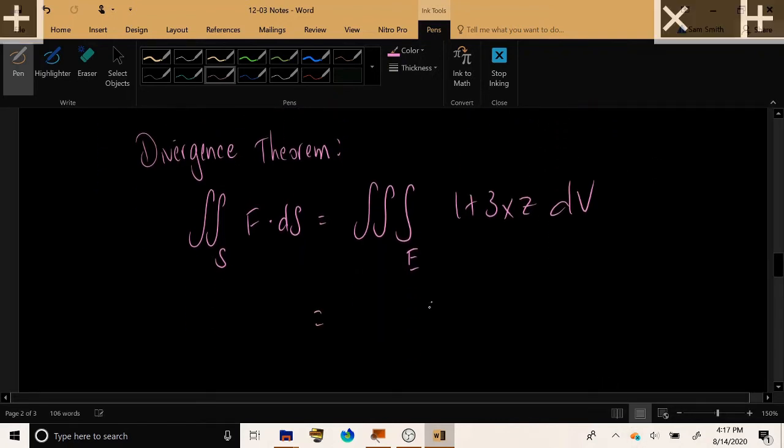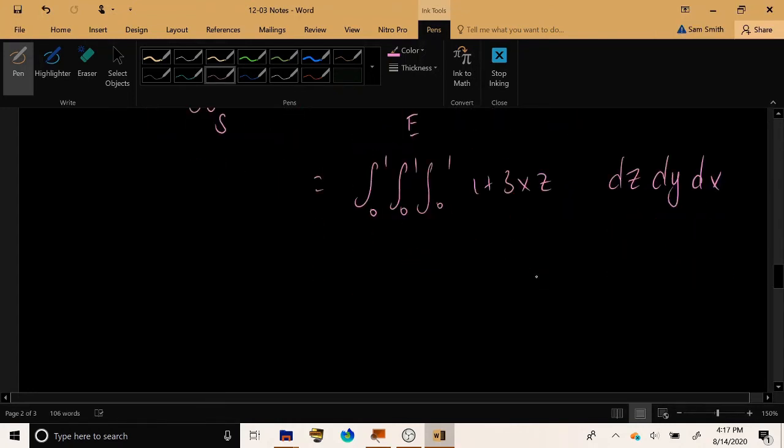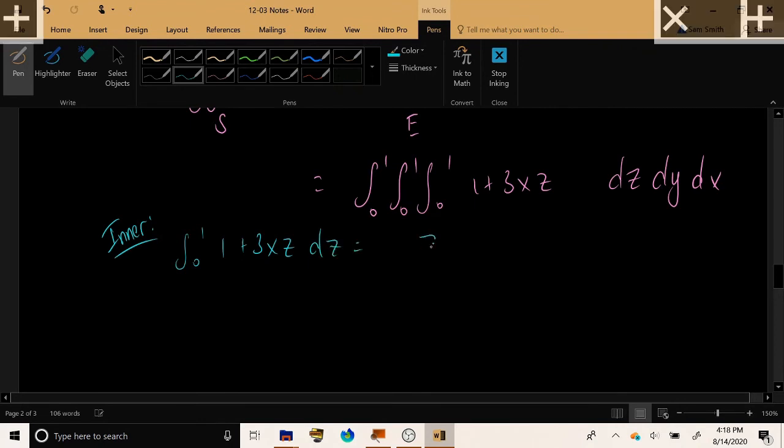It just goes from 0 to 1 in the z direction, constant 0 to 1 in the y direction, and a constant 0 to 1 in the x direction. And so integrating with respect to z, let me separate this out just to make it a little easier. Integrating with respect to z gives me z plus 3 halves xz squared from 0 to 1, which would be 1 plus 3 halves x.